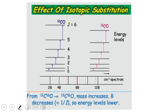Looking at the spectrum: for ¹²CO the spacing between lines is 2B, 4B, 6B, 8B, 10B, 12B and so on. For ¹³CO the spacing is also 2B′, 4B′, etc., but with a smaller B′. Initially the lines overlap, but as you move to higher J values you can see a growing shift between the pink (lower frequency, heavier isotope) and blue (higher frequency, lighter isotope) peaks.